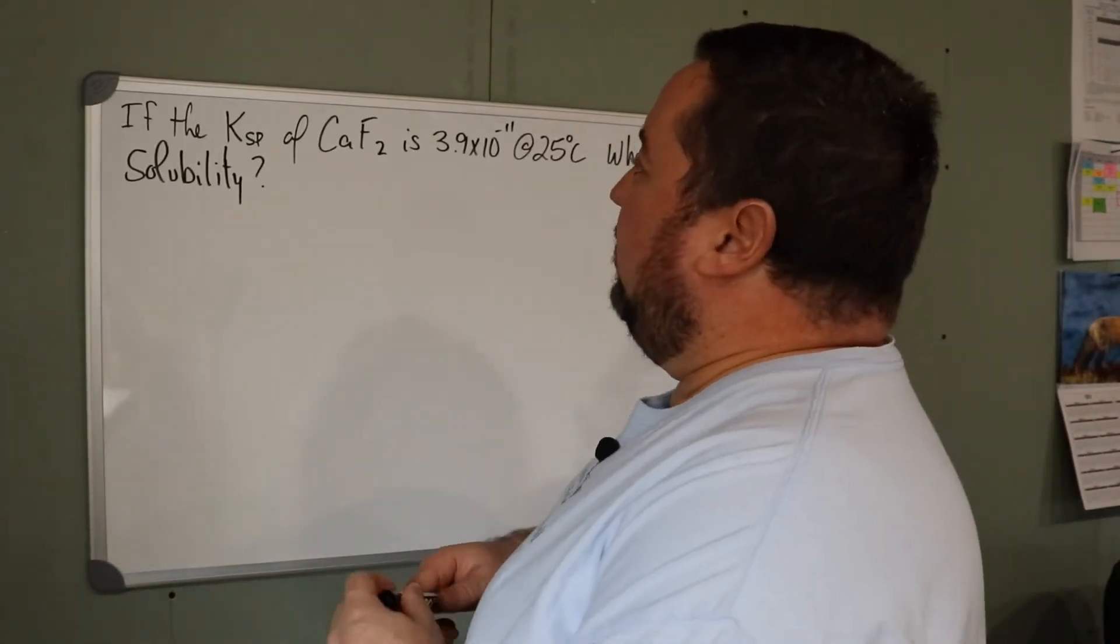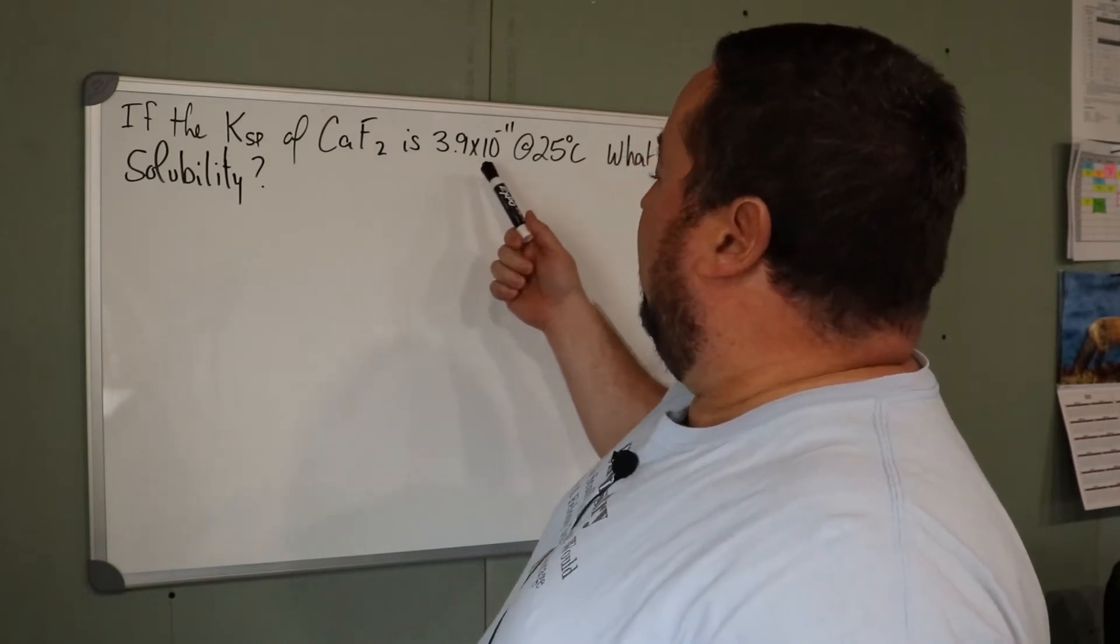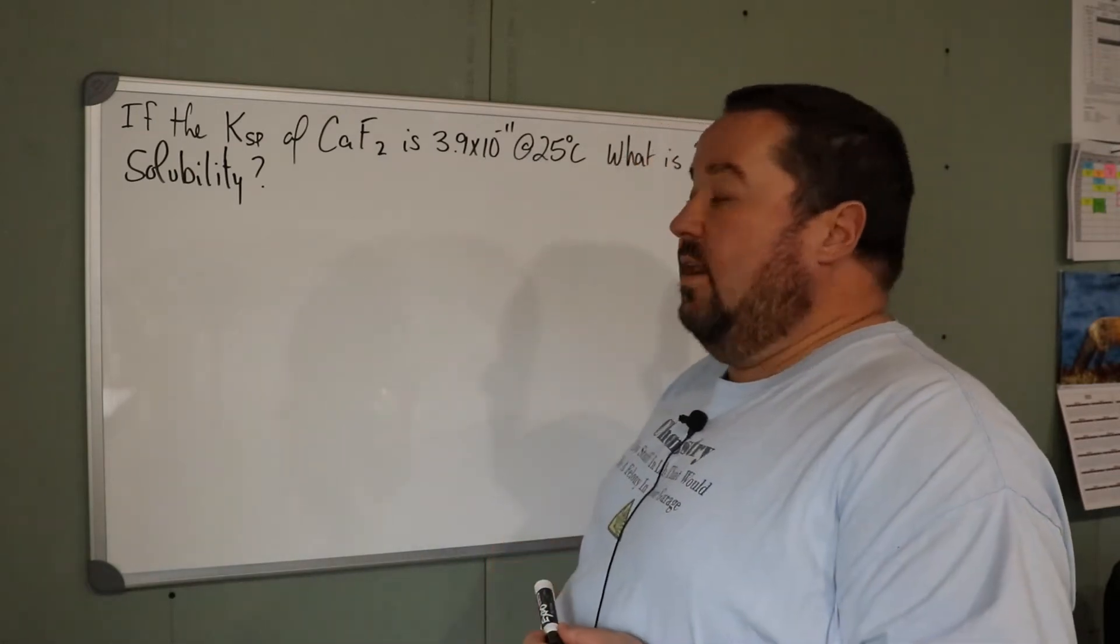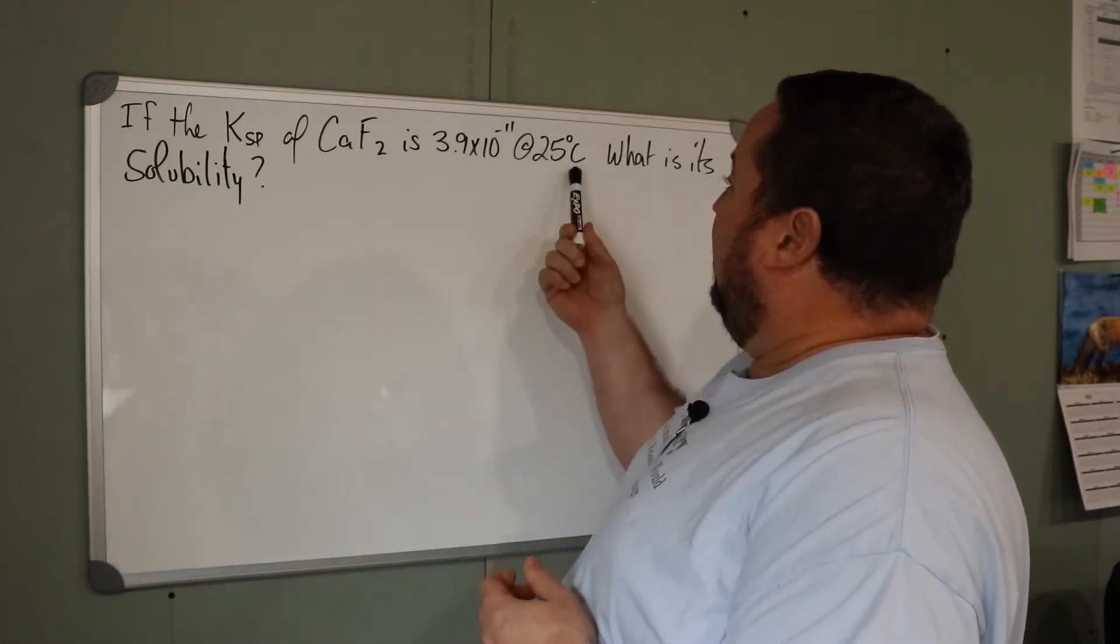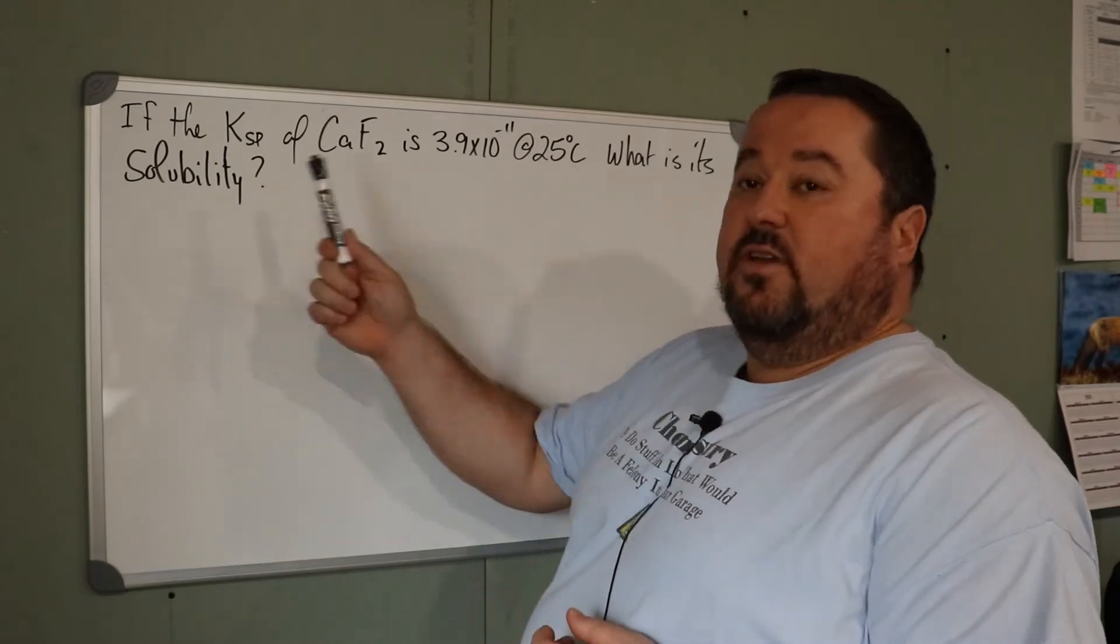So we have a second example. If the Ksp of calcium fluoride is 3.9 times 10 to the -11 at 25 degrees Celsius, what is its solubility?